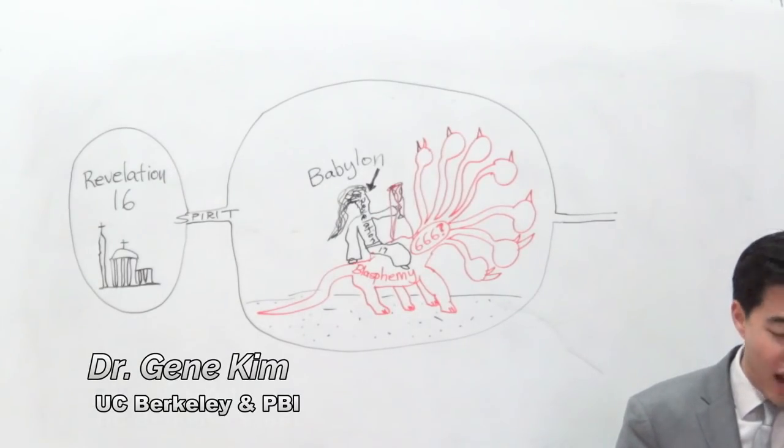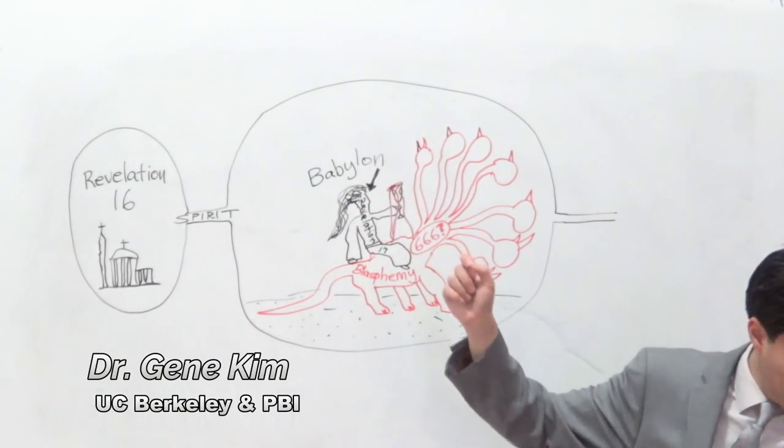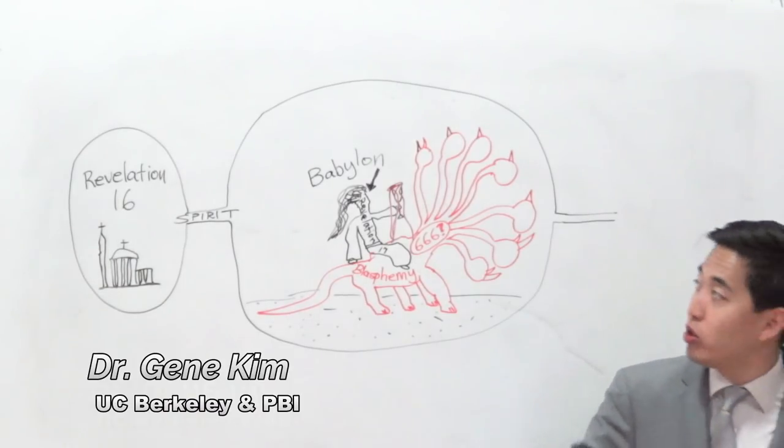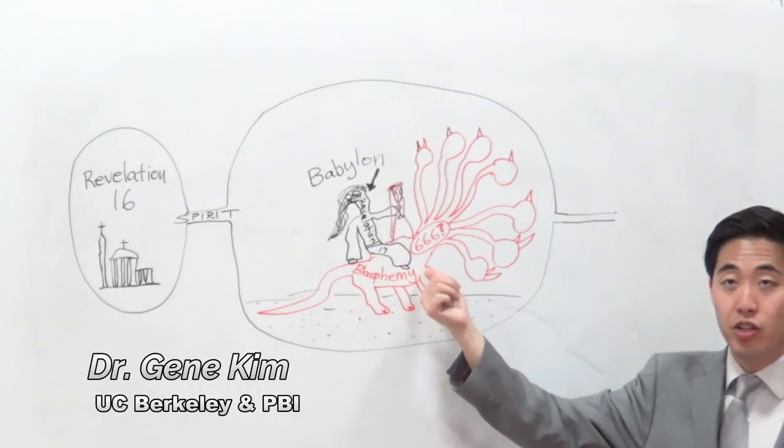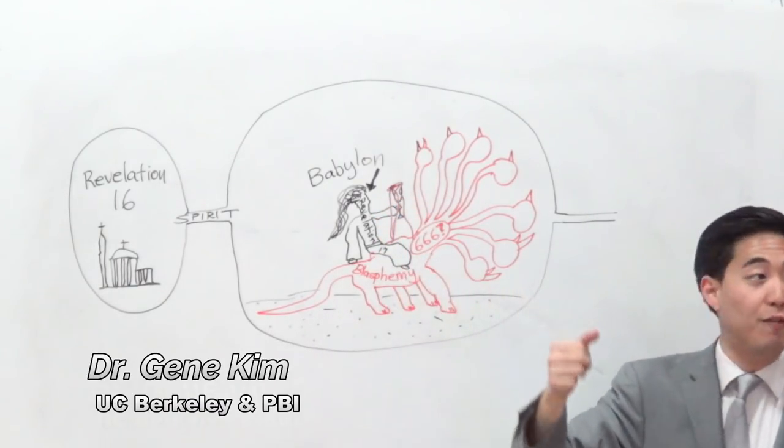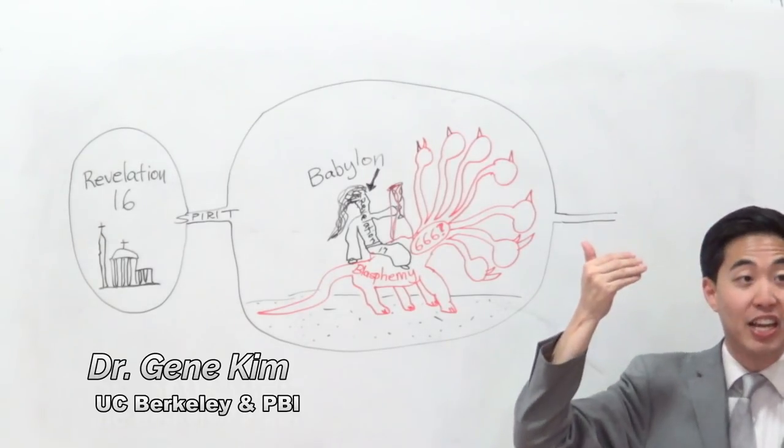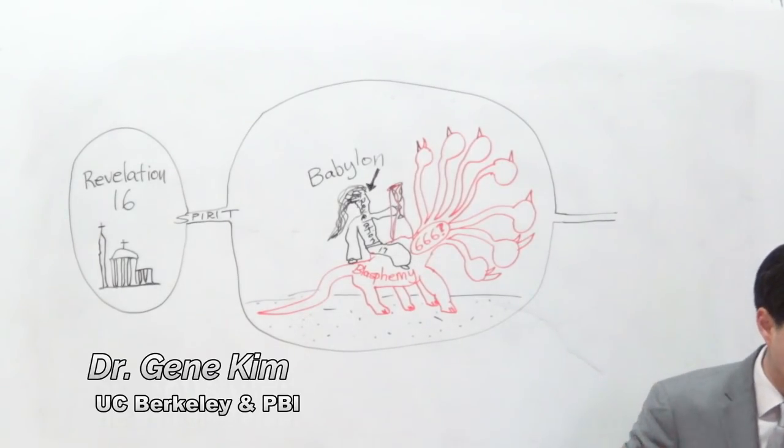Let's look at verse 5. And upon her forehead, so what's on her forehead, was a name written. So just like Satan, she's going to follow Satan and she's going to follow the Antichrist in having a name of blasphemy. What's on it?